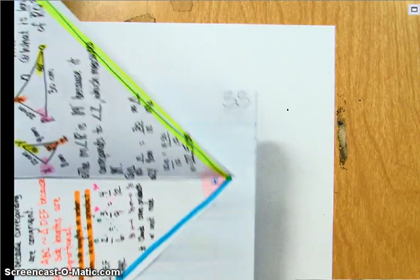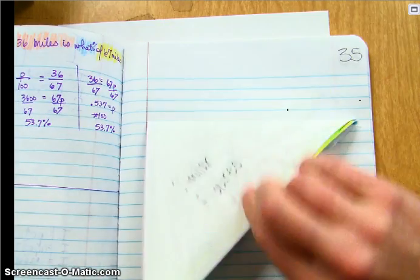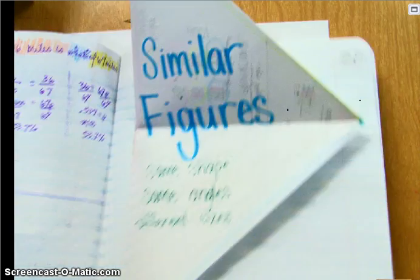Today we are going to be making a foldable for similar figures, specifically similar triangles, and when you are finished, this is what we will be looking at.